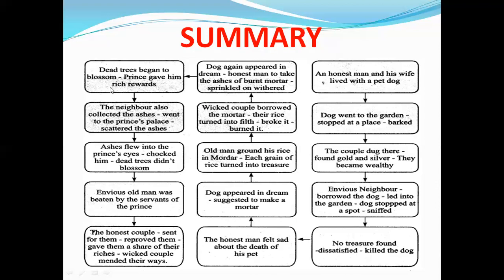The wicked old couple borrowed the mortar, their rice turned into filth, so they broke it and burned it. The dog again appeared in the dream and told the honest man to take the ashes of the burnt mortar and sprinkle them on withered trees. The dead trees began to blossom and the prince gave him rich rewards. The neighbor also collected ashes and went to the prince's palace, but the ashes flew into the prince's eyes. The envious old man was beaten by the prince's servants. The honest couple sent for them, reproved them, and gave them a share of their riches. The wicked old couple mended their ways.